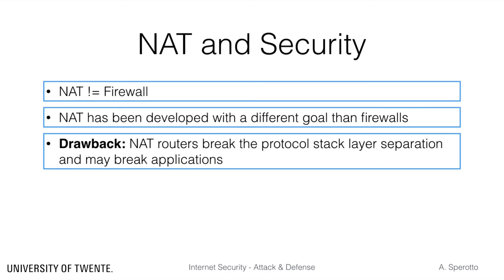NAT devices are also often criticized because they do not respect the protocol stack layer separation. NAT is implemented in routers, which are network-level devices. However, NAT manipulates both network-level and transport-level information in a packet. NAT might also interfere with the functioning of several applications, especially those relying on random ports.